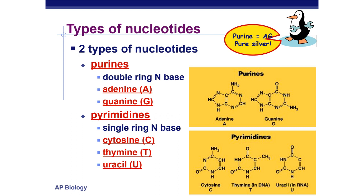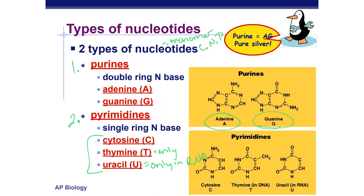Let's look more closely at the nitrogen bases and the different classifications of nucleotides. Remember, the nucleotide is the monomer, and it has a nitrogen base, a carbon sugar, and a phosphate group. We have two basic types of nucleotides: purines and pyrimidines. Purines are the double-ringed structures — those are adenine and guanine. Pyrimidines have just one nitrogen ring — those are cytosine, thymine, and uracil. Uracil is only in RNA, and thymine is only in DNA.